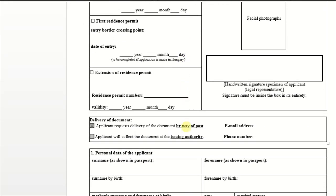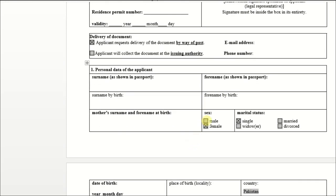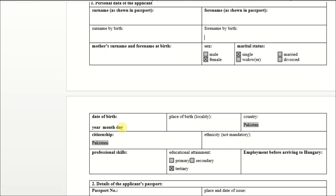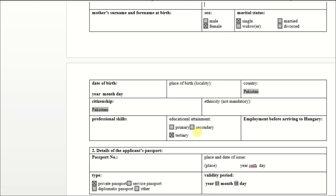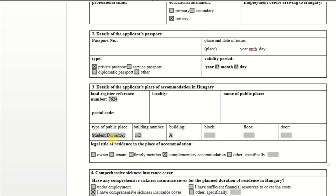Next is the residence permit form. The application asks whether you want to receive it by post or by hand — depending on your choice, you have to write that. If you are not available and you want someone else to collect your passport, you have to write that. Personal data includes: surname, your name, mother's name, sex (male or female), marital status (married or single), date of birth, and place of birth.